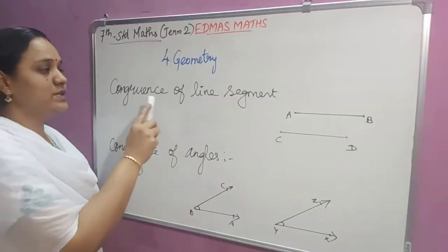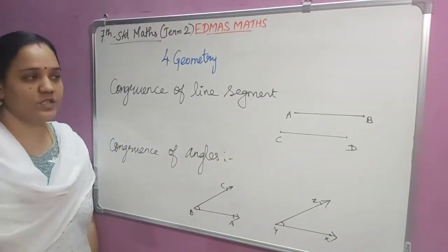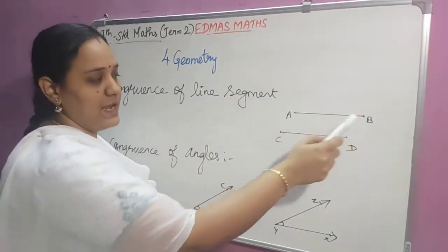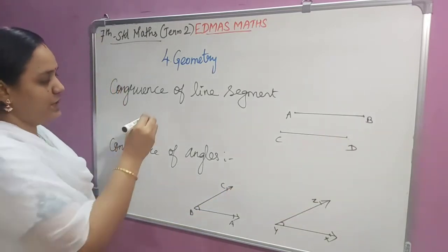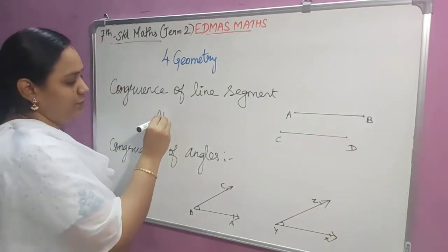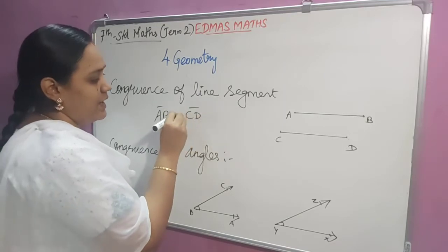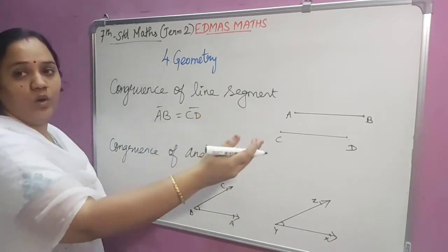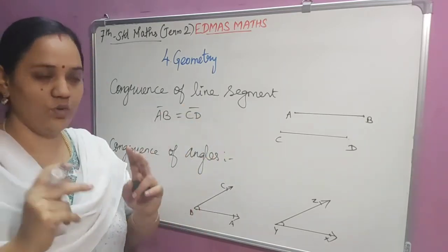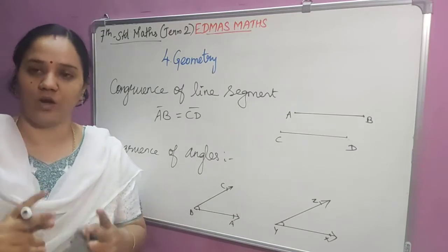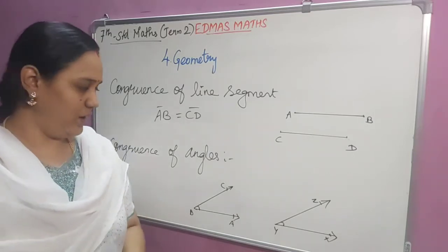Next is congruence of line segments. Here we have two line segments AB and CD. If the length of AB is equal to the length of CD, then these two line segments are congruent. If two line segments are congruent, their lengths should be equal.